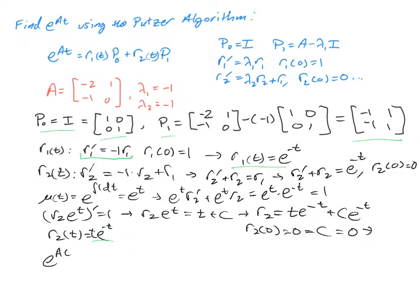So E to the AT is going to be the R1, which is E to the negative T, times P0, which is 1, 0, 0, 1, plus the R2, which is T E to the negative T, times the P1 matrix of negative 1, 1, negative 1, and 1.